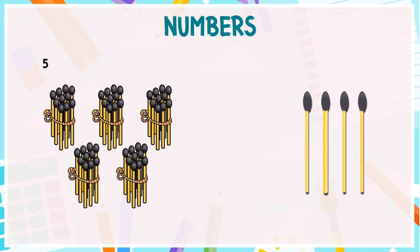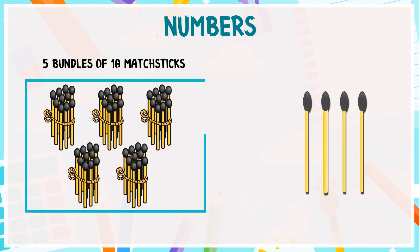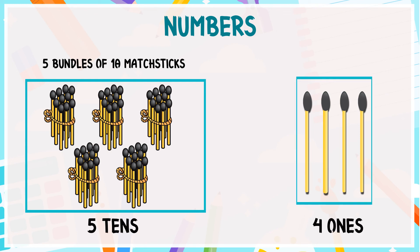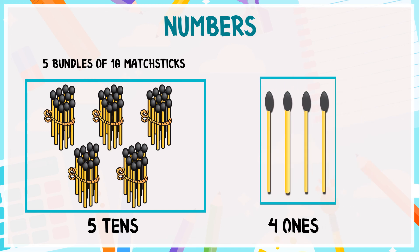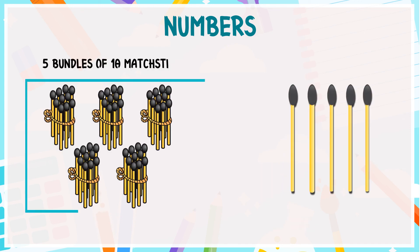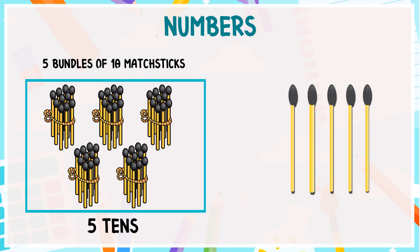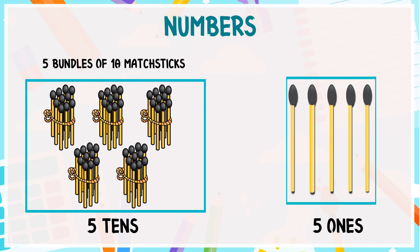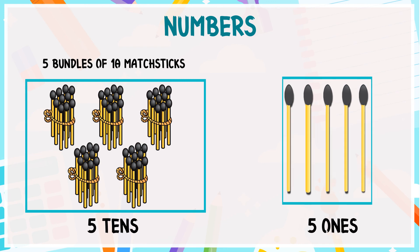These are 5 bundles of 10 math sticks in each, so it is 5 tens and let's draw 4 ones. So, 5 tens and 4 ones is equal to 54. These are 5 tens and 5 ones. So, 5 tens and 5 ones is equal to 55.